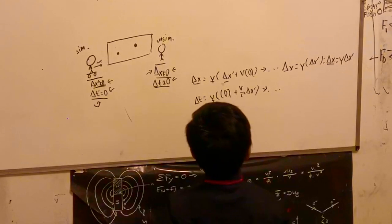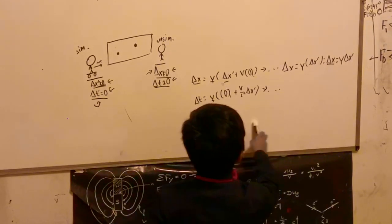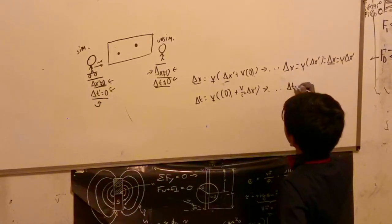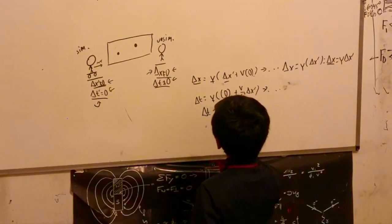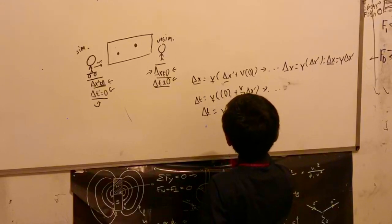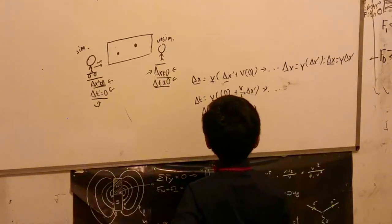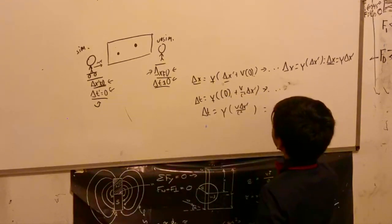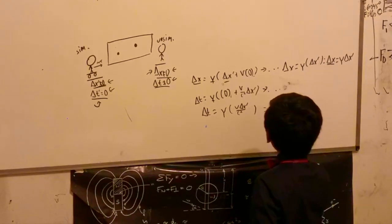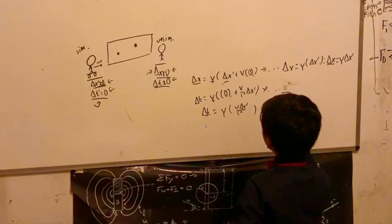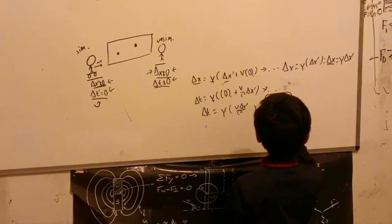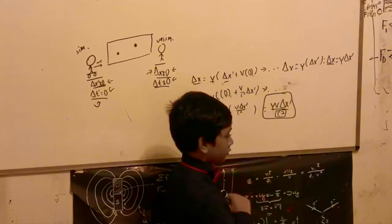Now we are going to simplify this one here, which will give us delta t is equal to gamma times v over c squared delta x prime. That gives us gamma v delta x prime over c squared, which is in no way going to be equal to zero, although it's probably going to be a little bit close to it considering that c squared is on the bottom.